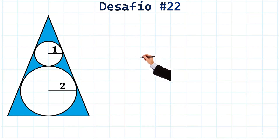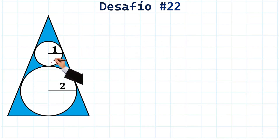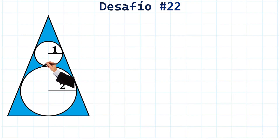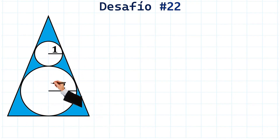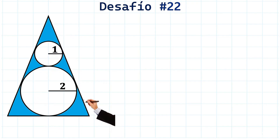Ladies and gentlemen, let's tackle this interesting exercise. We need to find the shaded area of the figure where we have two circles inscribed within an isosceles triangle.